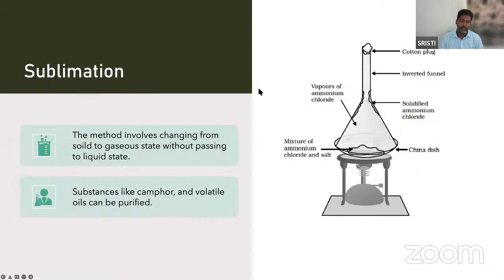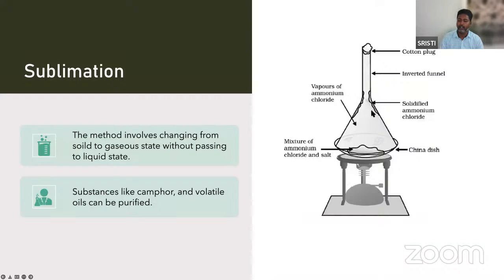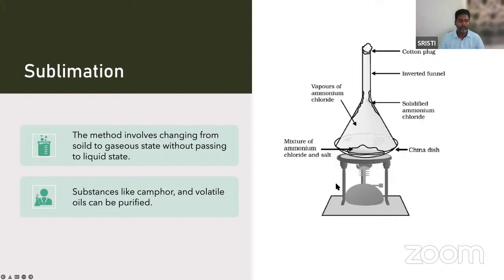Next is sublimation. This method involves changing a substance from solid to gaseous phase without passing through a liquid phase. Substances like camphor and volatile oils are purified using this method. In the apparatus, a funnel is placed over a china dish containing the compound. Upon heating, the compound transforms from solid phase into gaseous phase and deposits on the surface of the funnel, which is then collected separately.